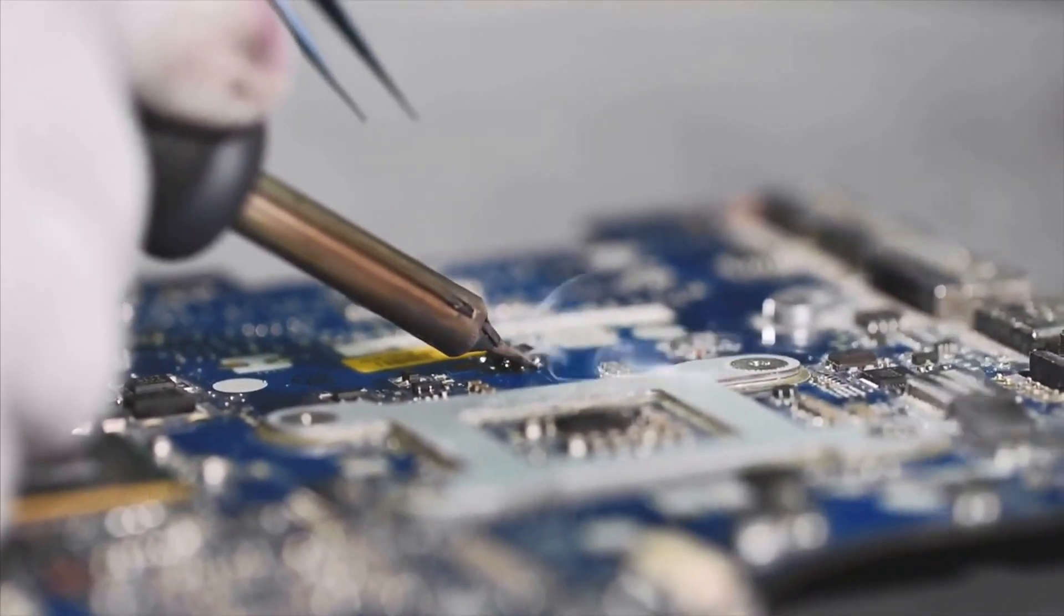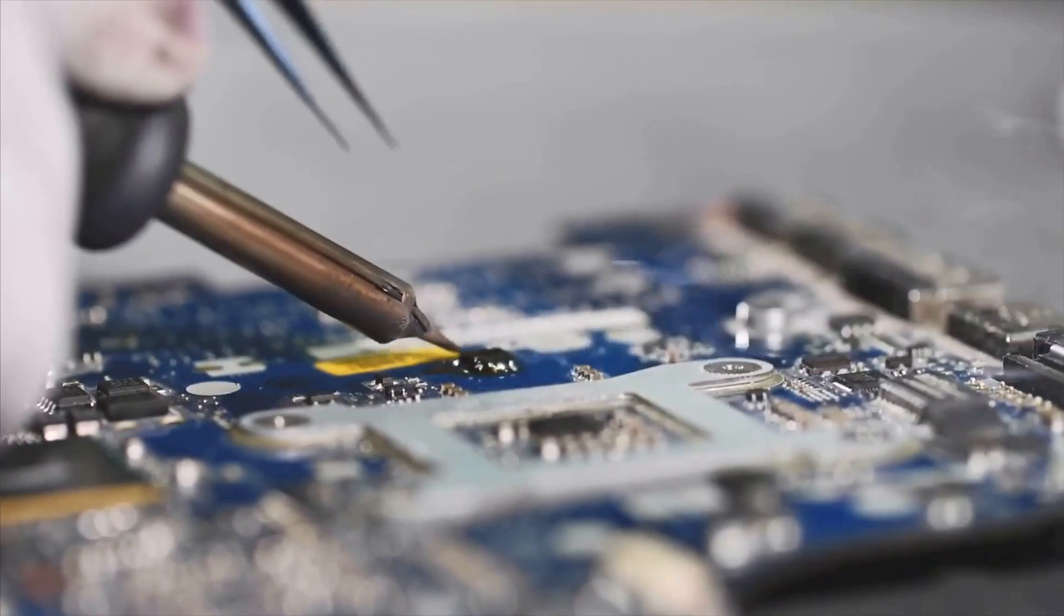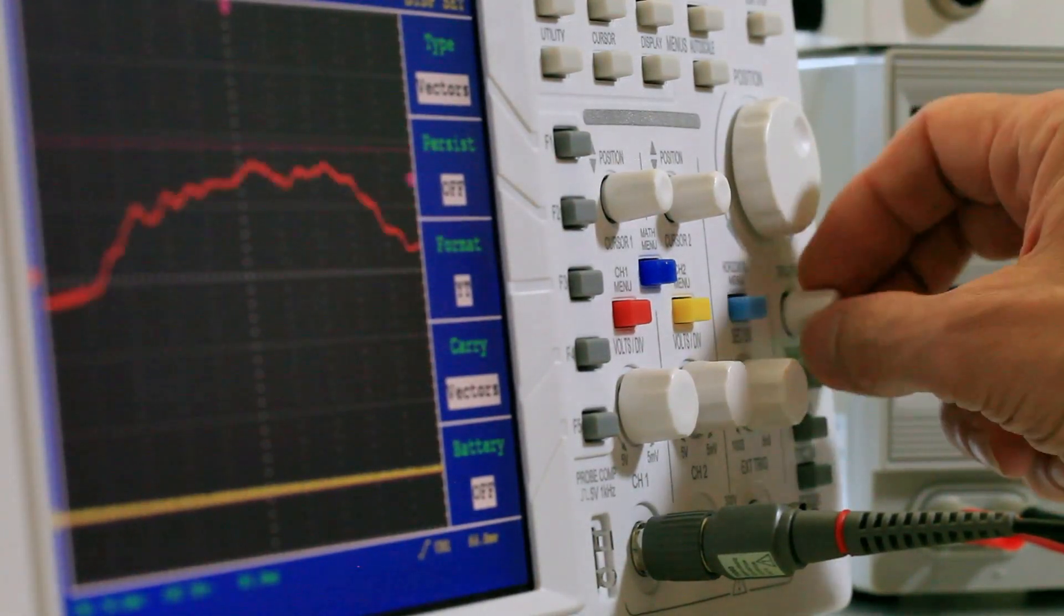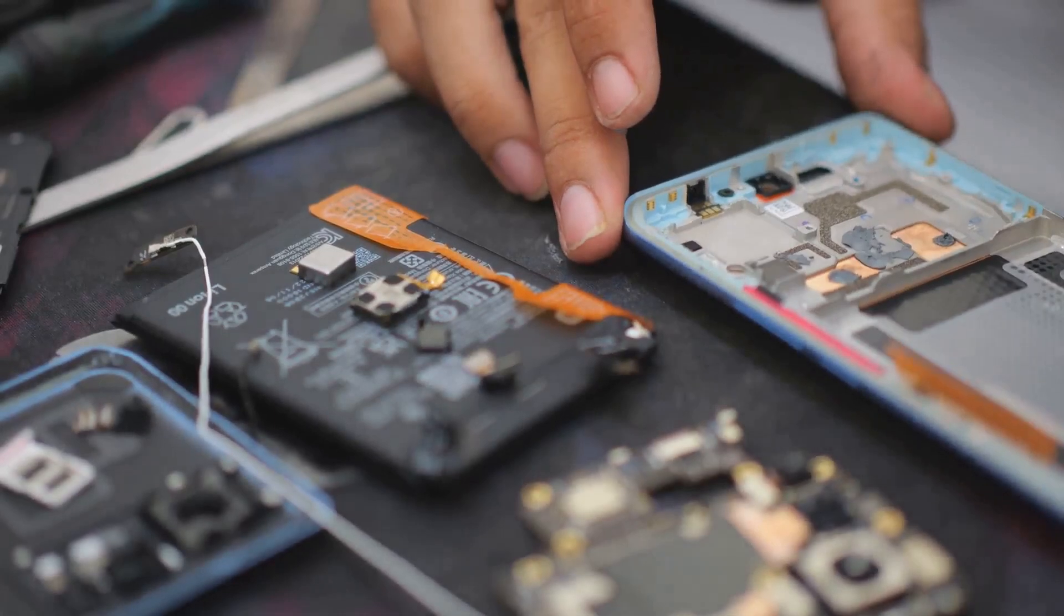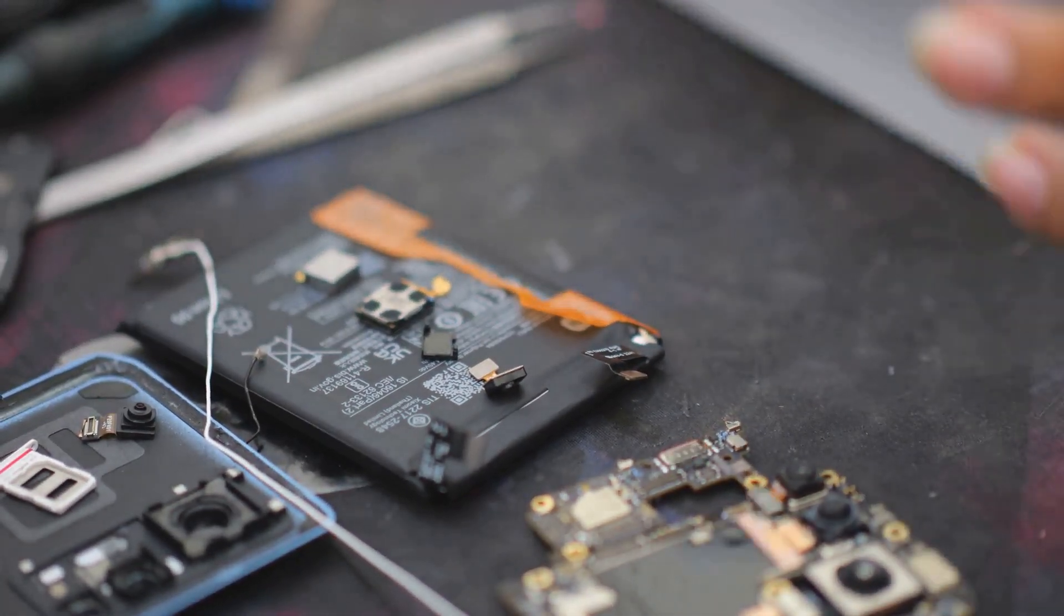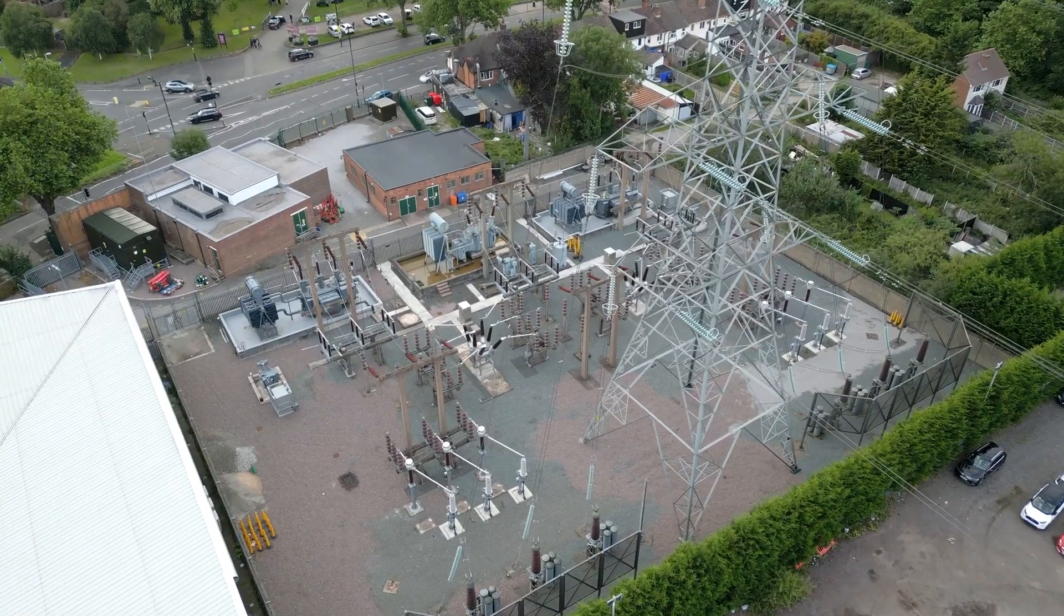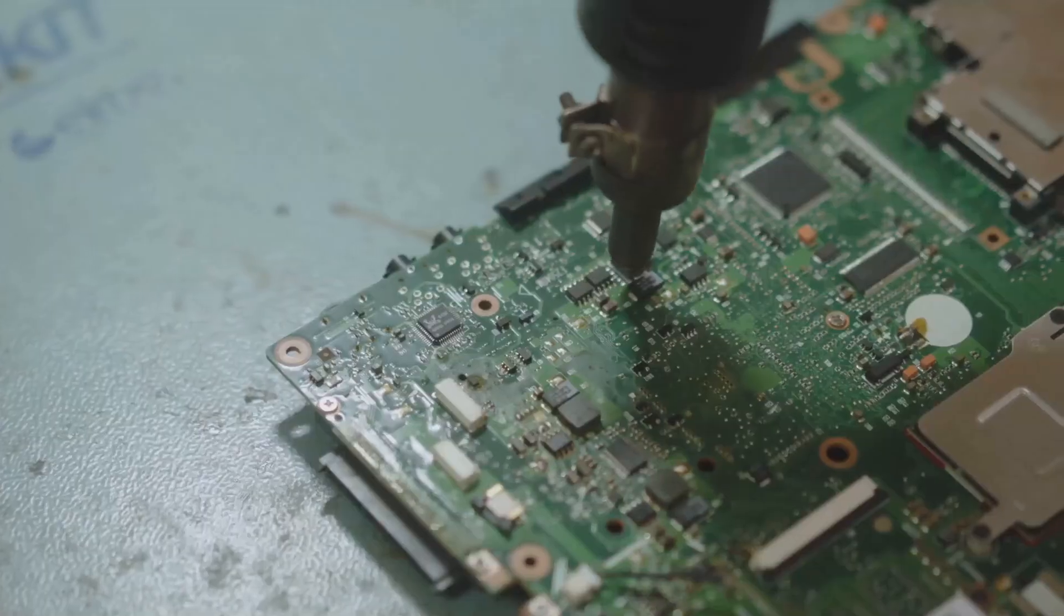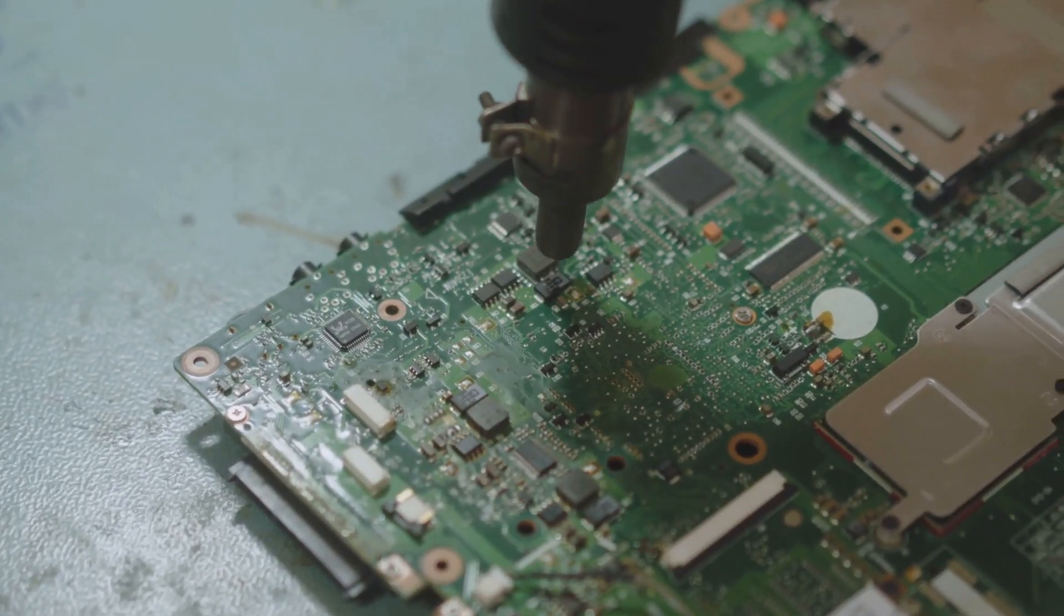One of the most common applications of diodes is in rectification. Rectification is the process of converting alternating current to direct current. Most electronic devices require direct current power to function. However, the electricity supplied to our homes and businesses is alternating current power. This is where rectifier diodes come into play.